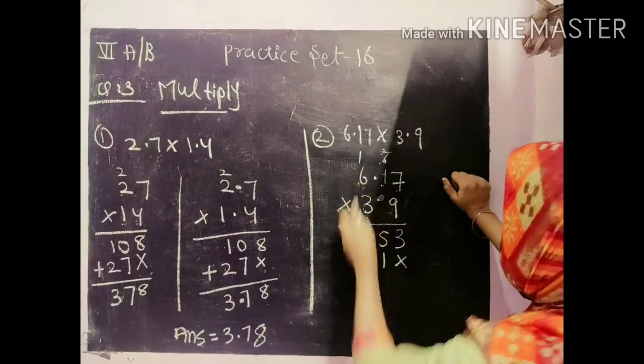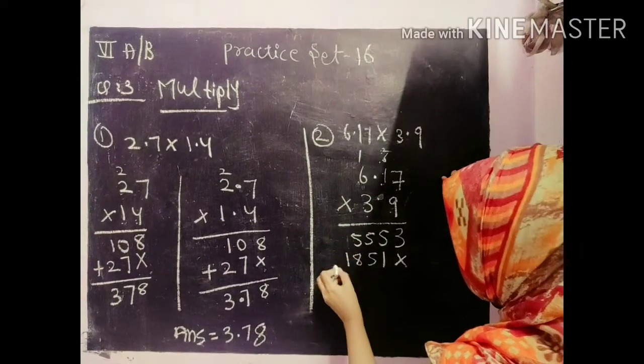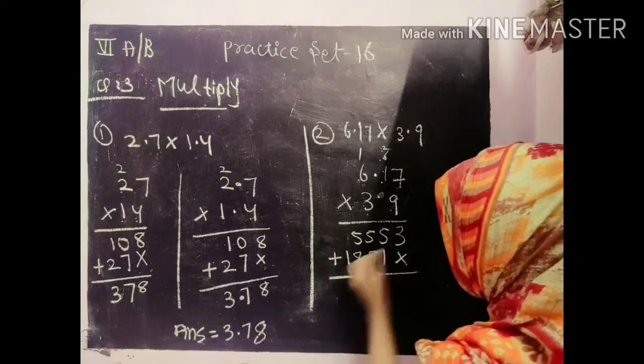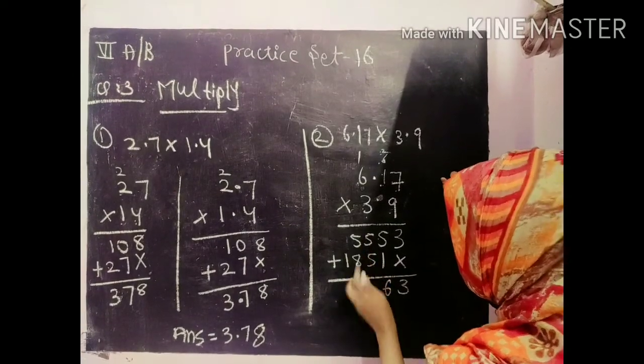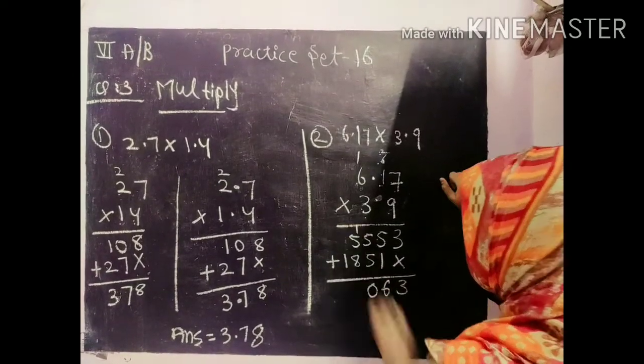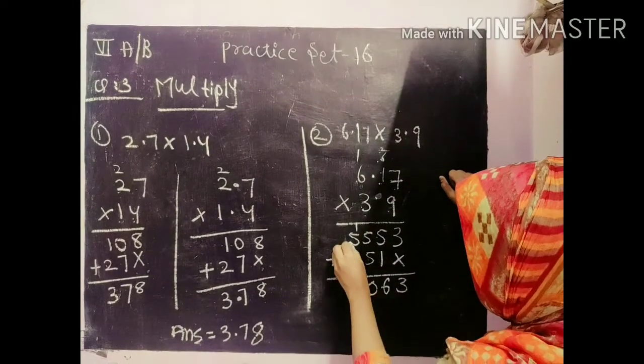And 3, 6's are 18. Plus. 3, 5, 1, 6, 5, 5, 10. 1 will come.